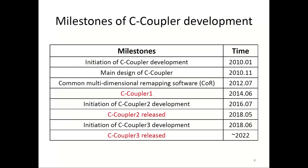We began to develop C-Couplers 2 in 2010, and we finished the first version, C-Couplers 1, in 2014. Next we finished the second version, C-Couplers 2, in 2018. And now we are involved in developing the third version, C-Couplers 3, that is planned to be released in 2022, two years later.